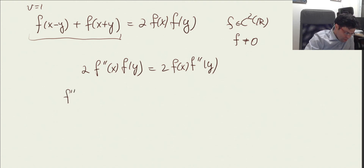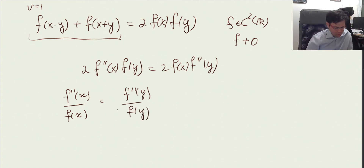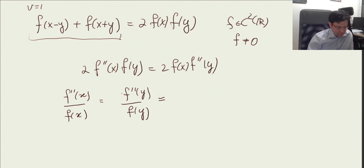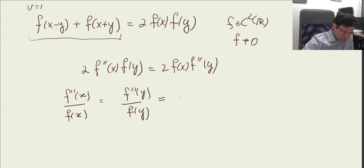We can divide by f, and then we obtain that f''(x)/f(x) equals f''(y)/f(y). That's a well-known situation in differential equations: since this depends only on x and that depends only on y, and the equality holds for every x and y, we can substitute any value for y where f(y) is non-zero. Then this side is some constant, and as a result f''(x)/f(x) has to be some constant — let's call it lambda.